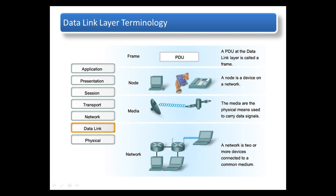A network is two or more devices connected together by a common medium. To fully understand the role of the data link layer, we must understand how this layer regulates the common medium. The wide range of different media used to interconnect devices together requires a correspondingly wide range of data link protocols. The geographic scope of a network, the physical layer implementation, and the number of hosts are deciding factors when considering what layer 2 protocol to implement. In this section, we will explore the purpose and the need for layer 2 protocols.